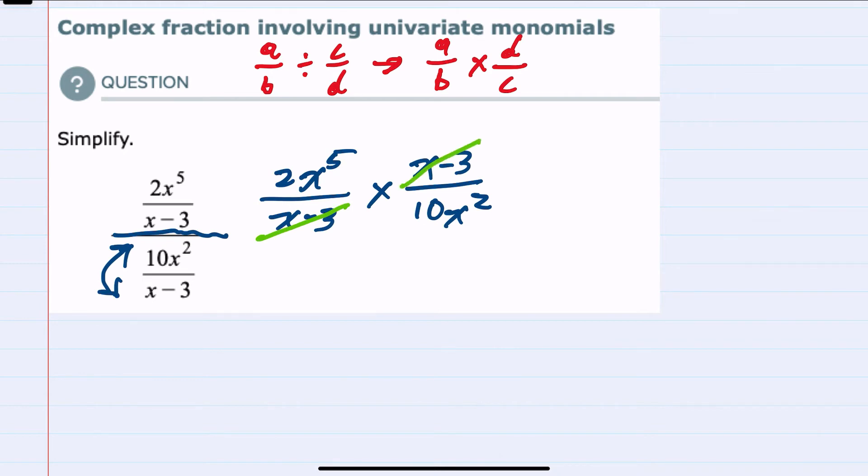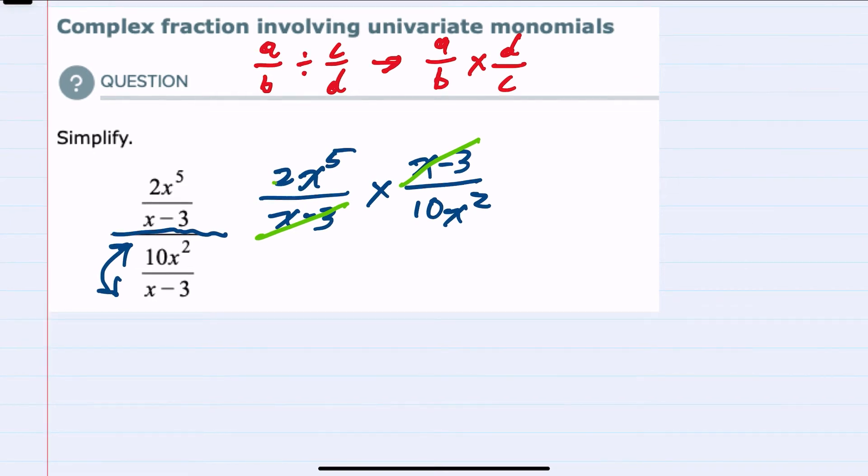Looking at the other diagonal, we have a 2 coefficient in the upper left-hand side and a 10 coefficient in the lower right-hand side. Those can also simplify. 2 goes into 2 once, and 2 goes into 10 5 times, and that leaves us with the x's.